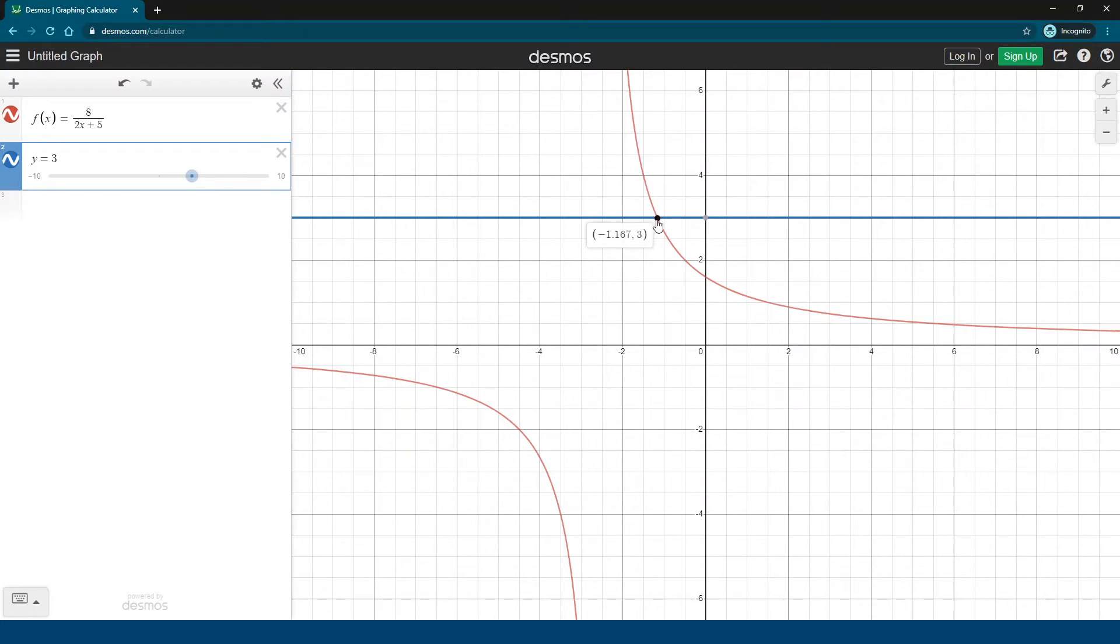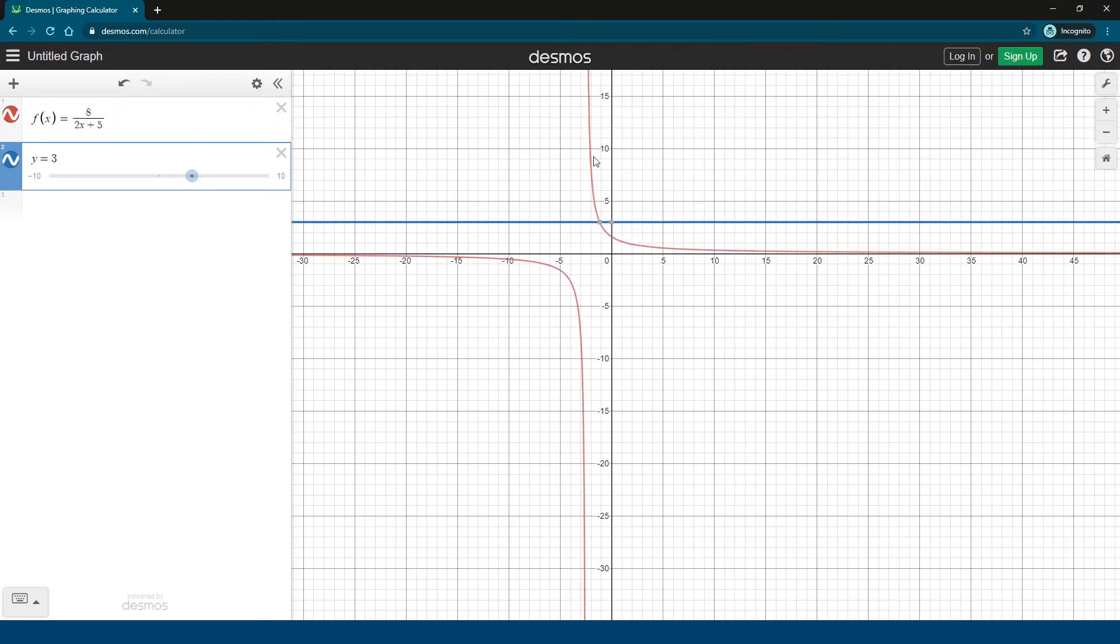Now, other than this little section up here, if I zoom out, you can see other than this section here, the graph is underneath this line y equals 3. So all this under here, f of x is less than 3. This is the portion we're looking for. So now we just have to be able to describe this in a meaningful way. What is going on here? Where are things on this graph?